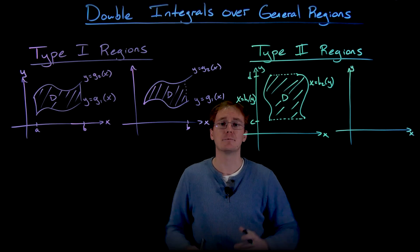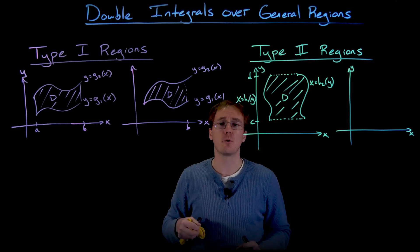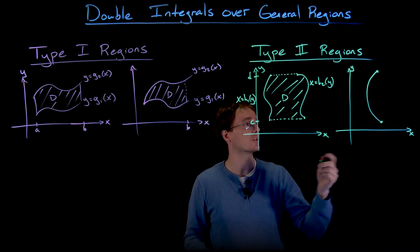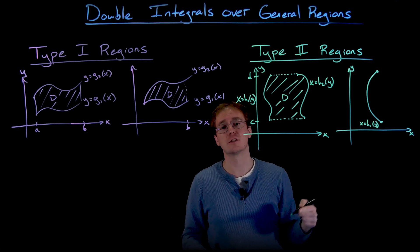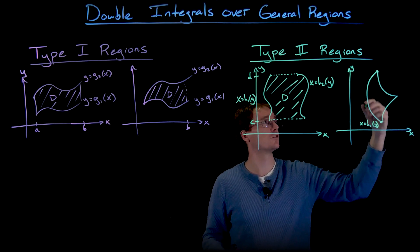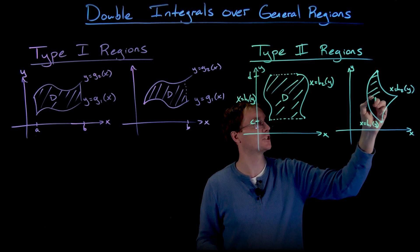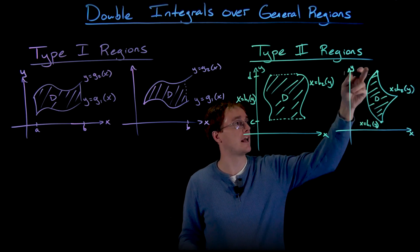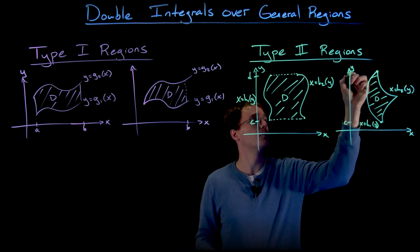Let's look at another example of a type 2 region. Similar to type 1, the ends of our region may or may not correspond to points of intersection. The leftmost curve — our x equals h1 of y — and the rightmost curve x equals h2 of y might share top and bottom points. The region is just the space between those right and left curves over some interval of y values between c and d.